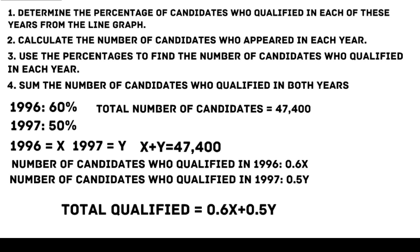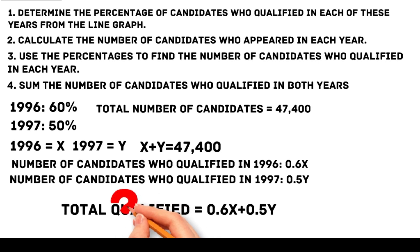Since we don't have the individual values of x and y, and assuming equal distribution of candidates across both years is only an approximation, the problem lacks sufficient data for a precise answer. So the answer should be a, data inadequate.